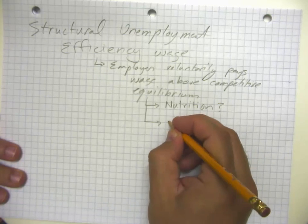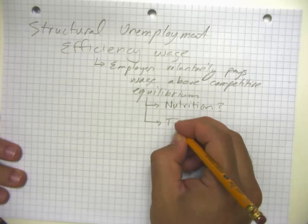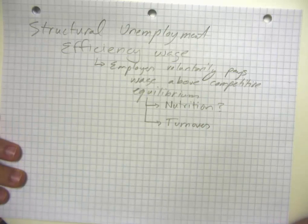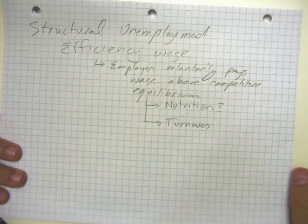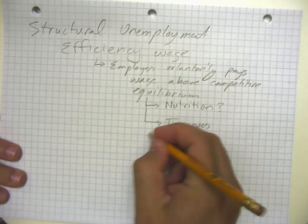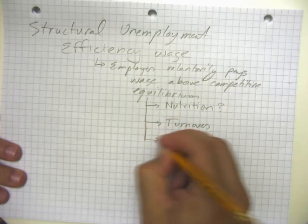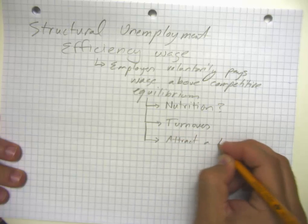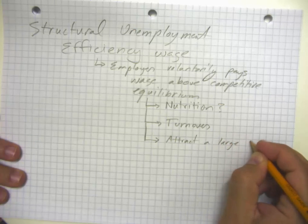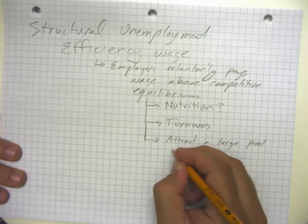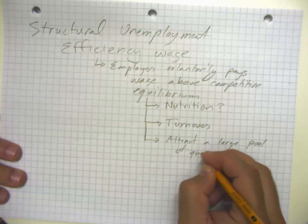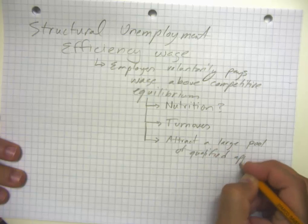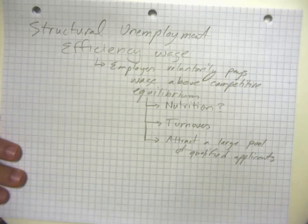Could be something like reducing turnover. If I pay higher wages, then people are less likely to quit. It could be that I want to attract a large pool of qualified applicants so that I can pick and choose. And it could be a mixture of all these things.